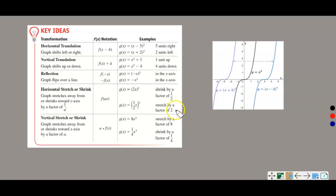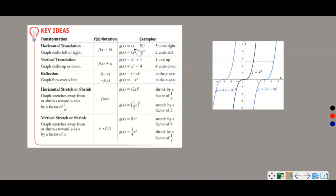Key ideas. This should seem familiar. We are working with cubic functions, which is something to the third degree or has an exponent of three. We've also looked at transformations of linear, absolute value, and quadratic functions, and the rules are very much the same. For a horizontal translation, your H value is inside parentheses — it's X minus H. So when it's negative five, it moves to the right, opposite the way you might expect based on the sign.